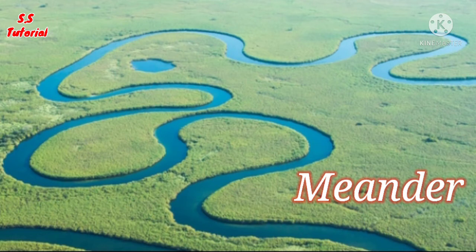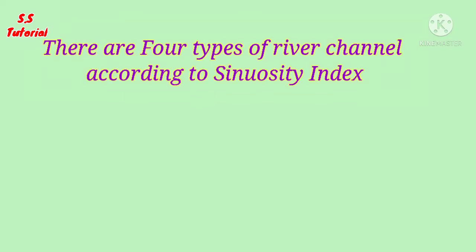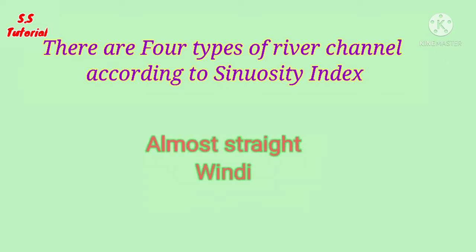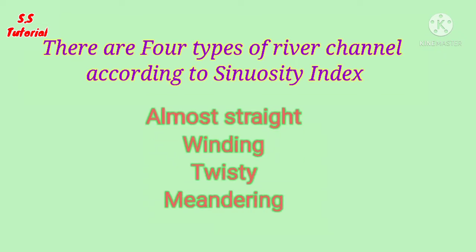It is named after the Meander river in Turkey. We need to know that there are four types of river flowing paths: almost straight channel, winding channel, twisty channel, and meandering channel.